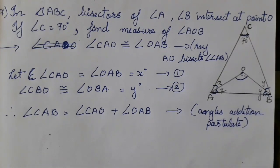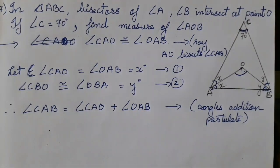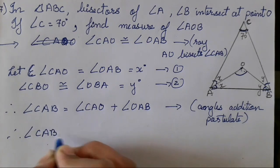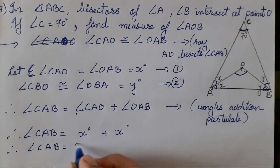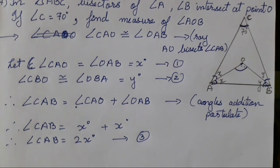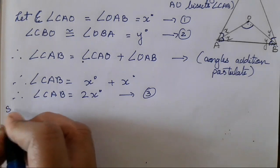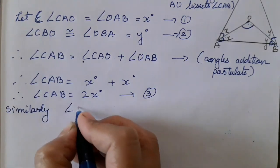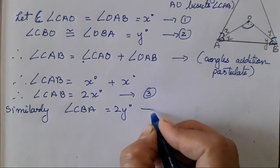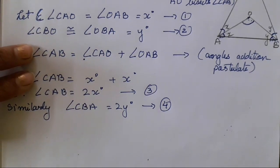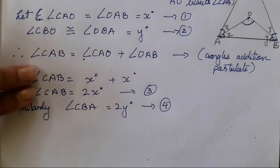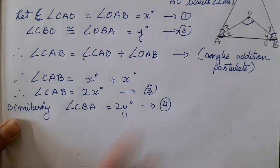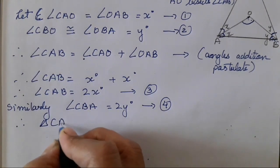By the angle addition postulate, angle CAB equals angle CAO plus angle OAB, so angle CAB equals 2X°. Similarly, angle CBA equals 2Y°. The same steps apply for Y using the same property.